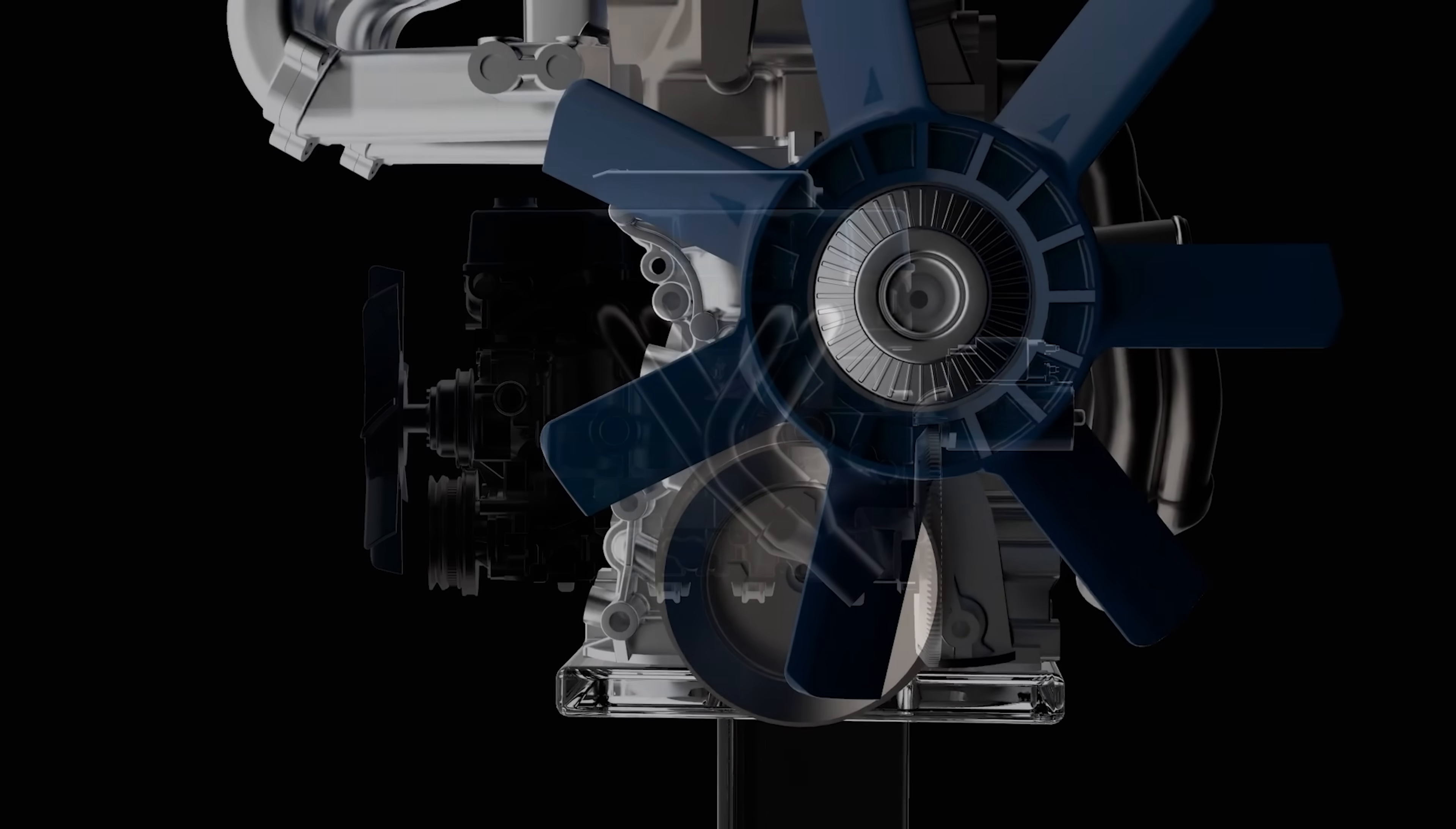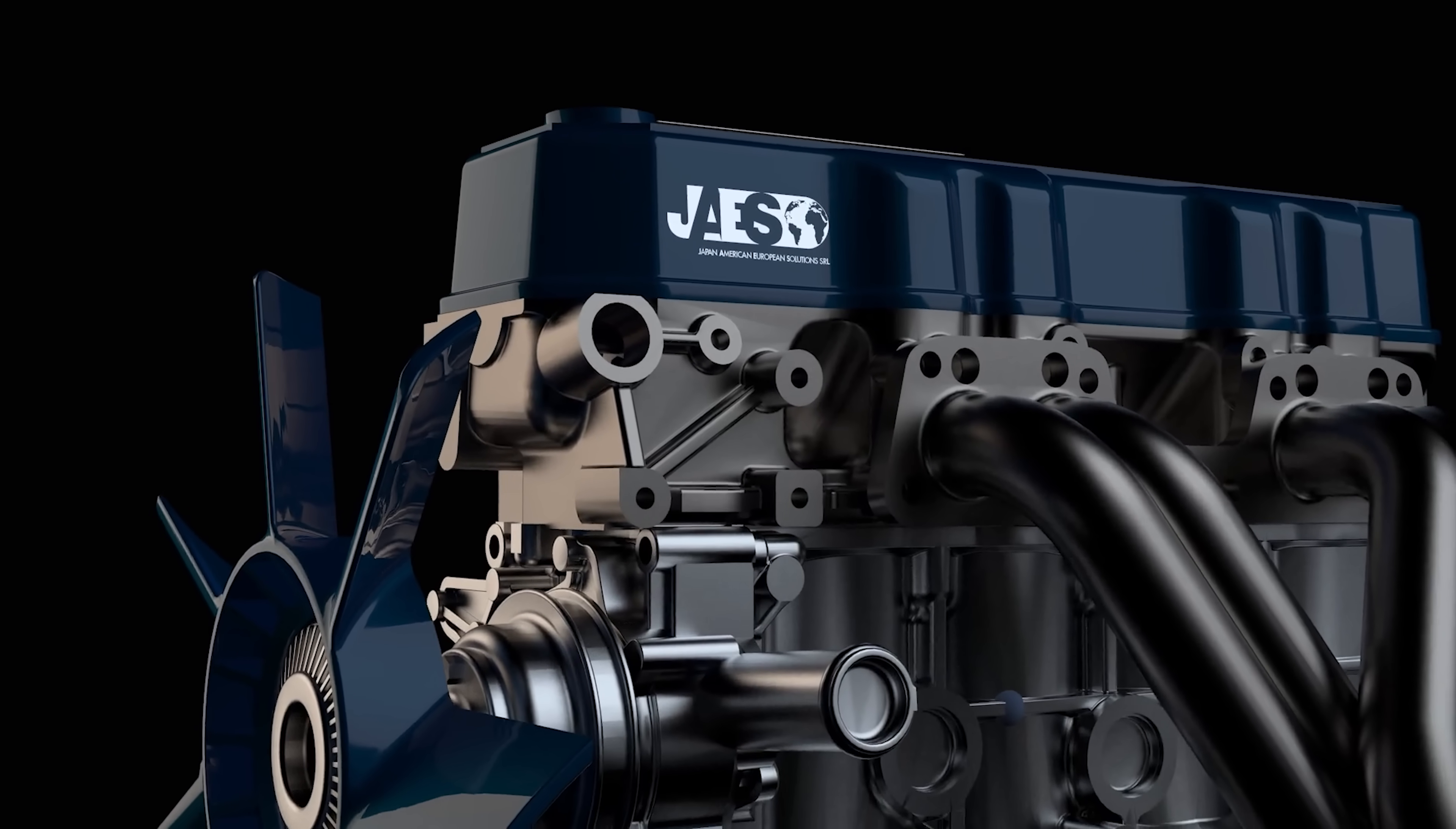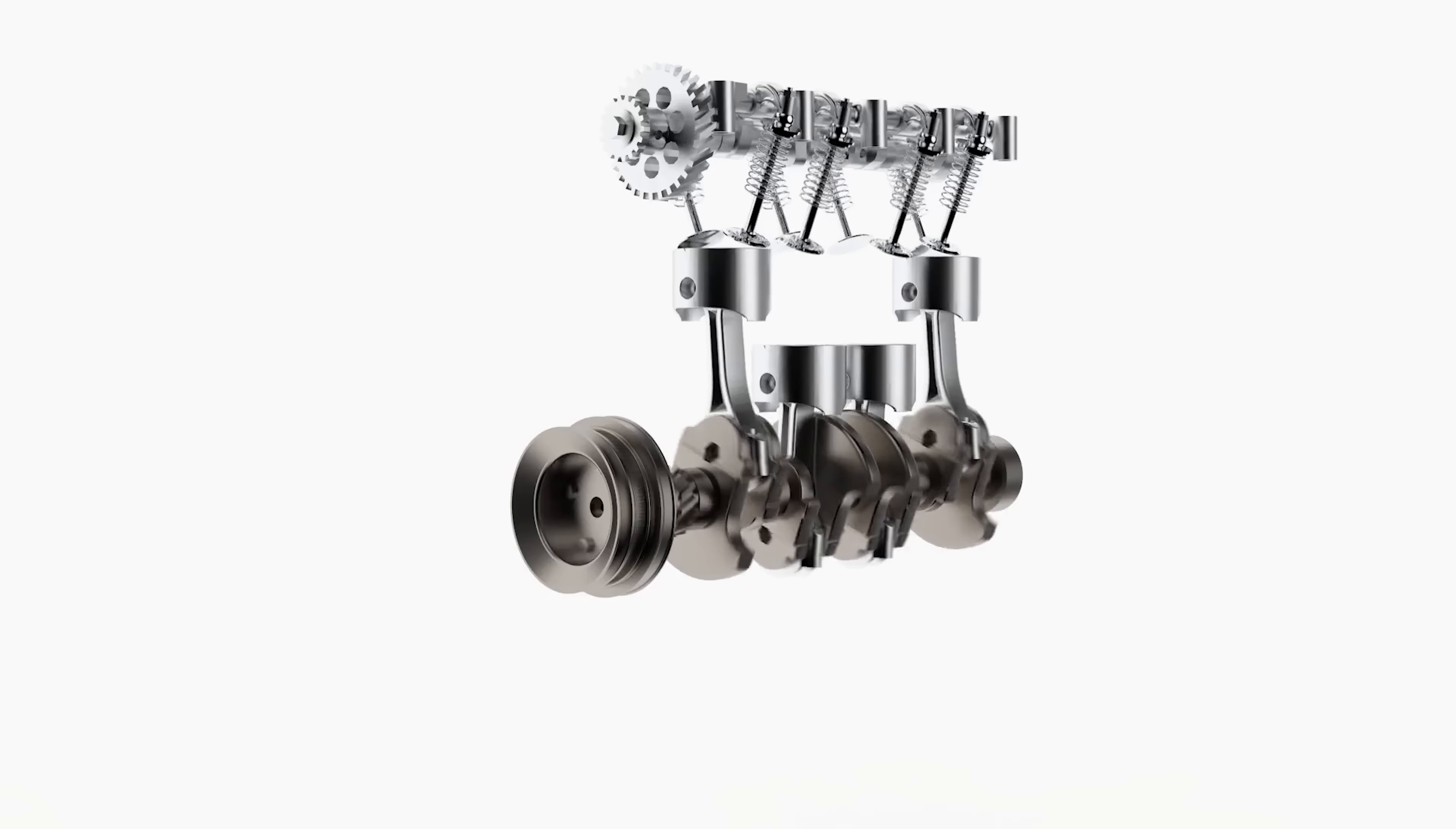A four-stroke engine represents an example of efficiency and perfect synchronization. It converts the explosions that occur inside its combustion chambers into motion. The aim of this engine is to use this energy to provide movement and transfer it to the wheels so that the vehicle can move.